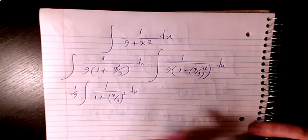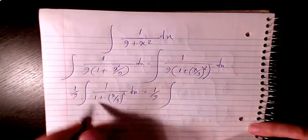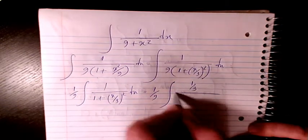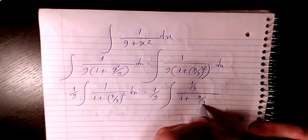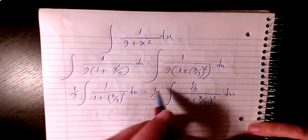I will have 1 over 9. I multiply both numerator and denominator by 1 over 3, so I will have 1 over 3 and I need to divide it by 1 over 3.